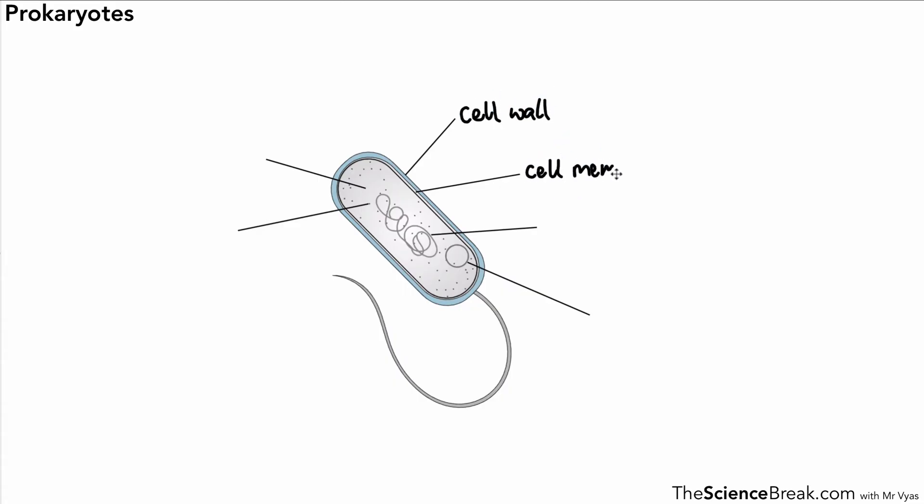We've got the cell wall, the cell membrane, we've got DNA which we describe as circular—so one end joins to the other. We also have another piece of DNA called a plasmid. That's also circular, and that's extra or separate from the main circular DNA, and it contains a few genes.